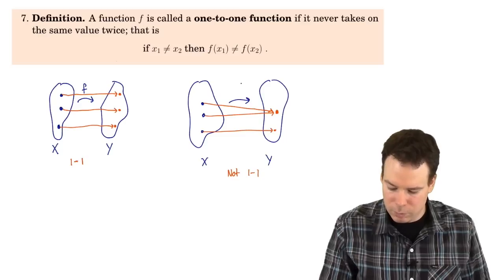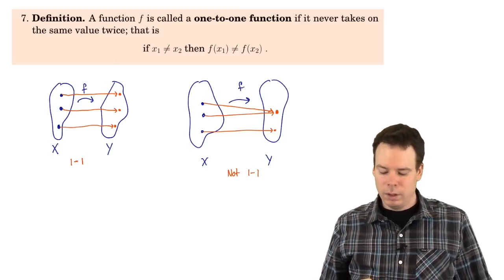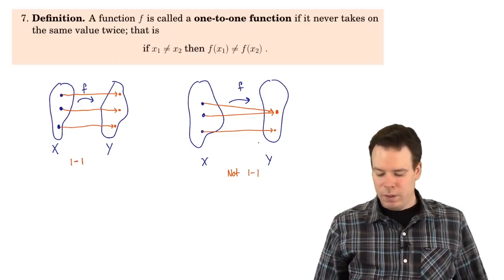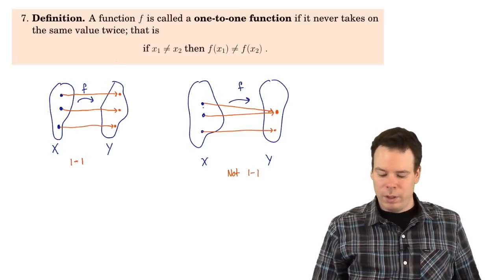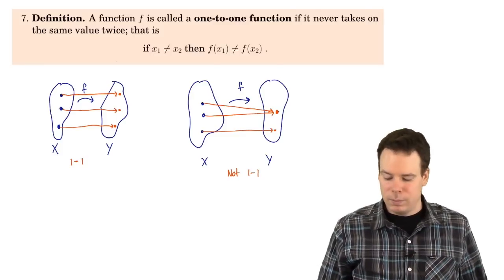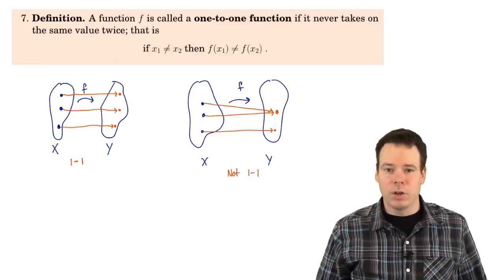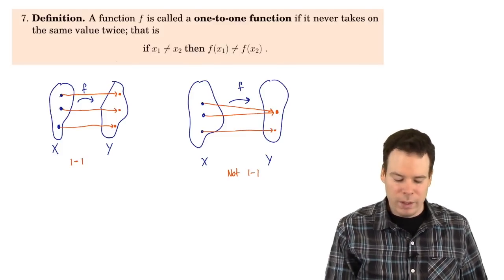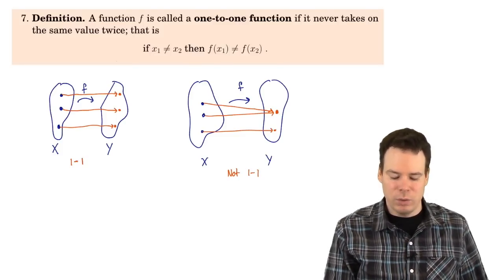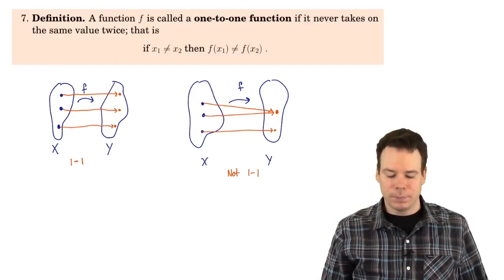Let's just get the name in there — so that was f. A function that's not one-to-one has two different inputs that get sent to the same place. A function that is one-to-one has every input sent to a different place than every other input.